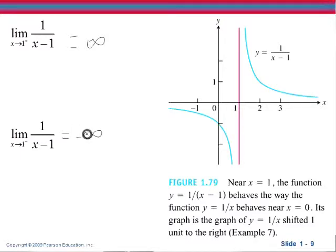Now this is not saying that the limit exists, or that infinity or negative infinity are numbers. It's just saying that the limit does not exist because 1 over x minus 1 becomes arbitrarily large as x approaches from the right and arbitrarily small as it approaches from the left.